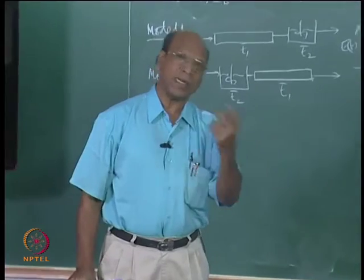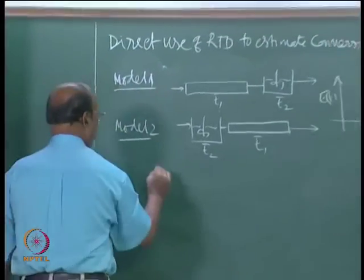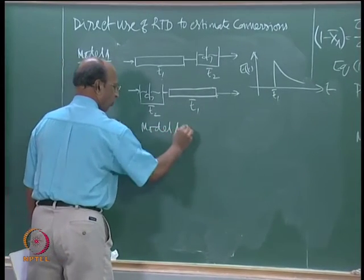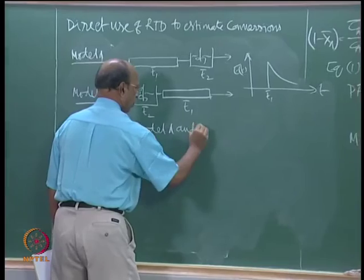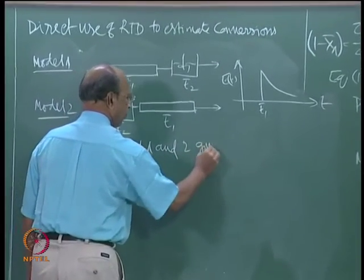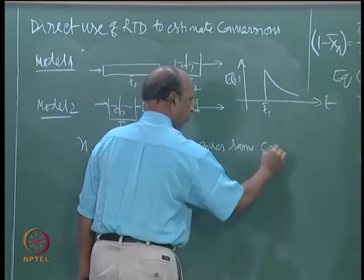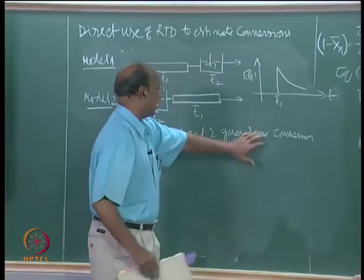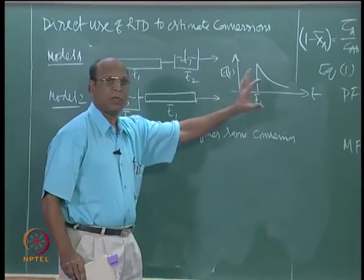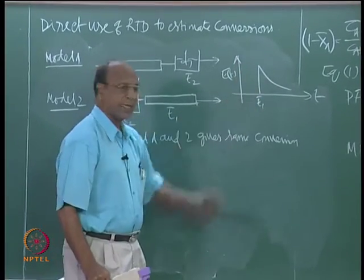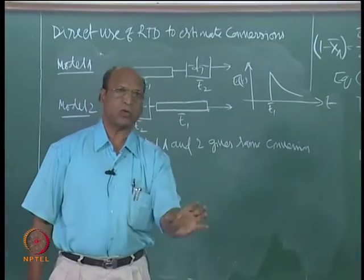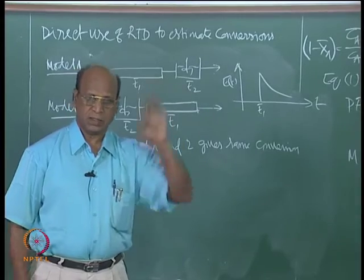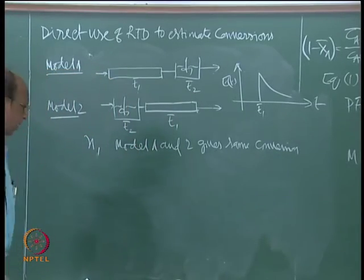For n greater than 1, Model 1 gives more conversion than Model 2. For n less than 1, the reverse is true - Model 1 gives less conversion. The reason is that one has late mixing and the other has early mixing, and this information is not given by RTD.